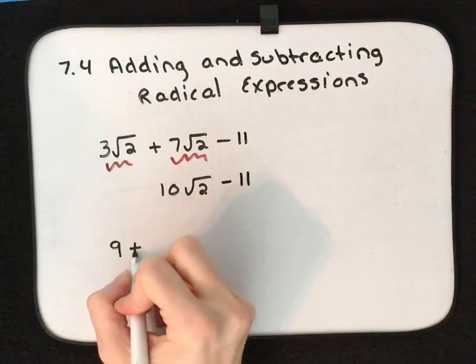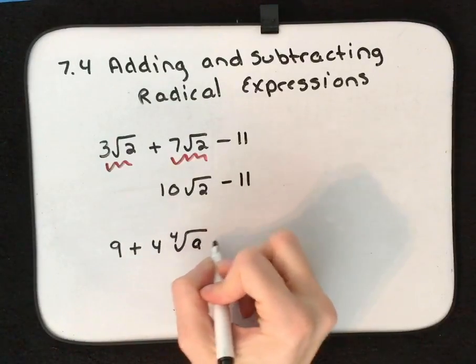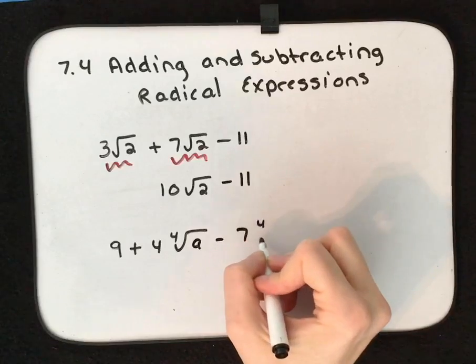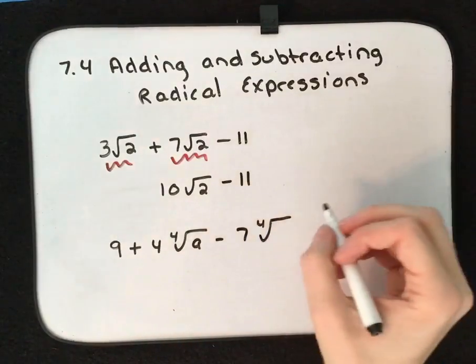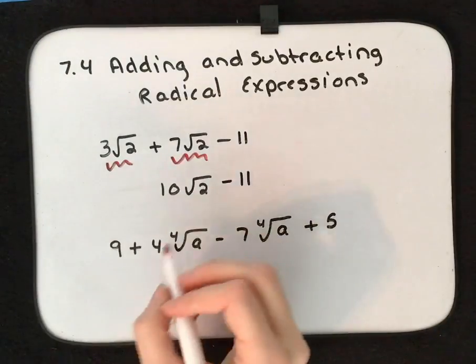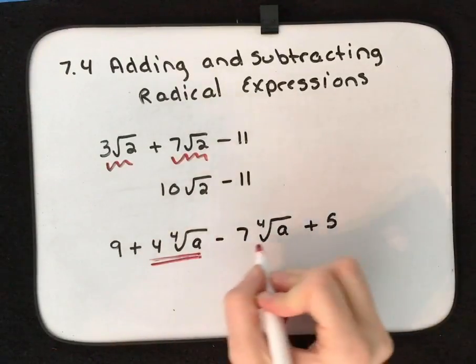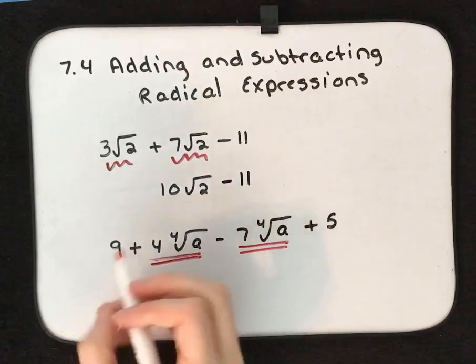Say we have 9 + 4 times the cube root of a minus 7 times the 4th root—excuse me—4 times the 4th root of a minus 7 times the 4th root of a plus 5. So now we have two sets of like terms. We have the a under the 4th root, and we have the constant.